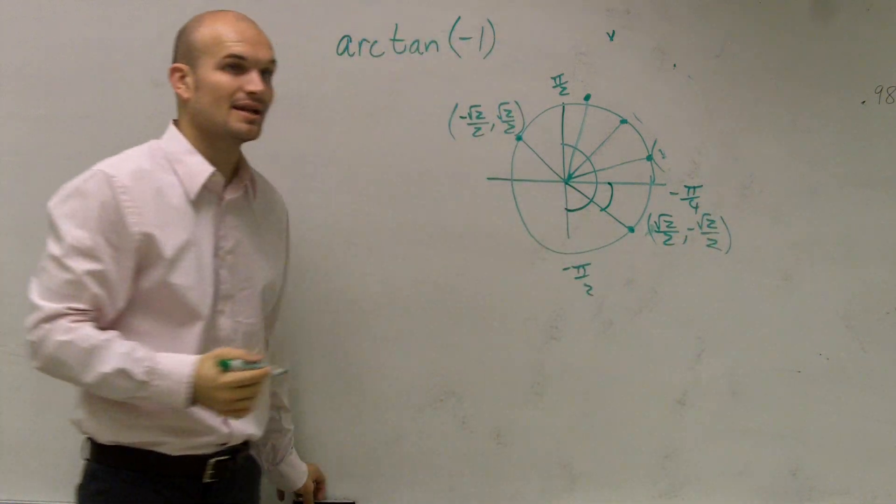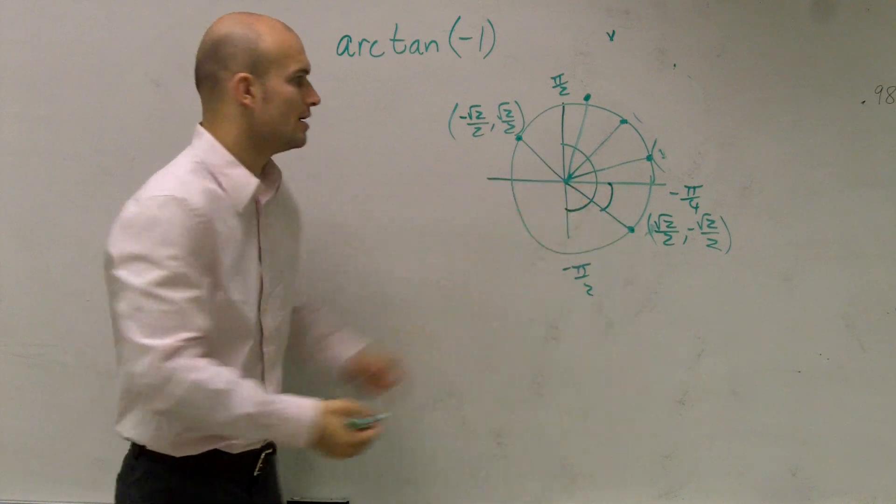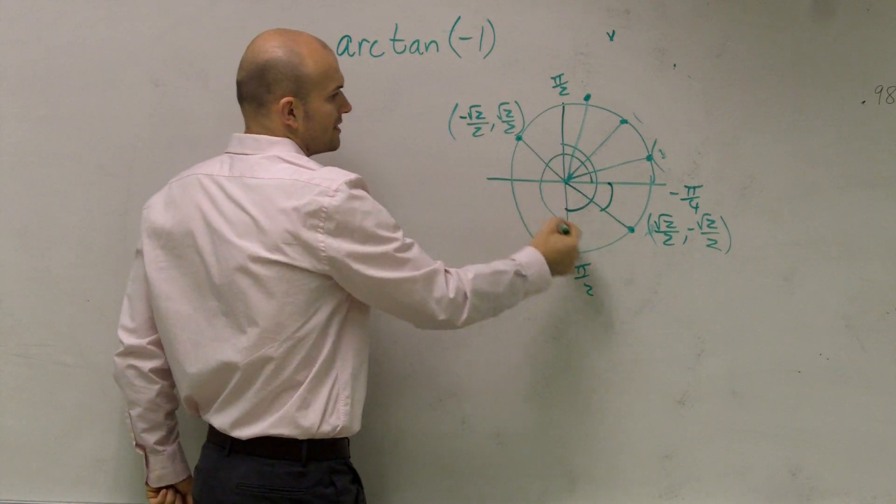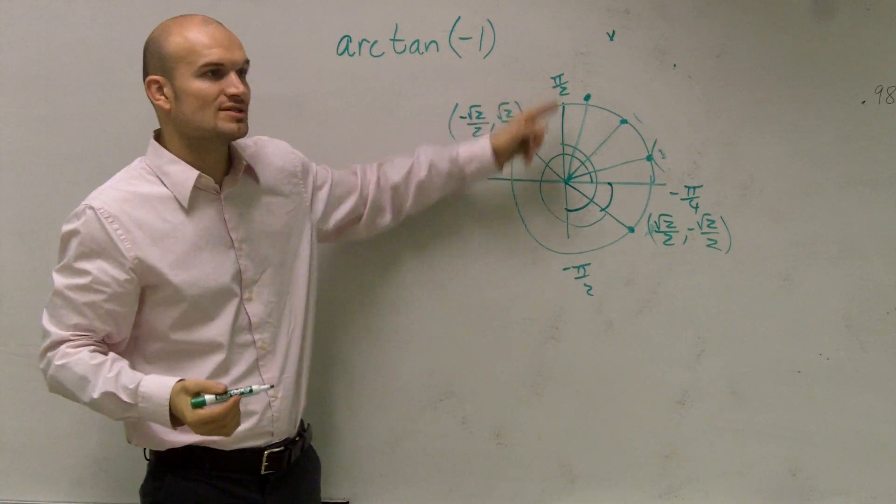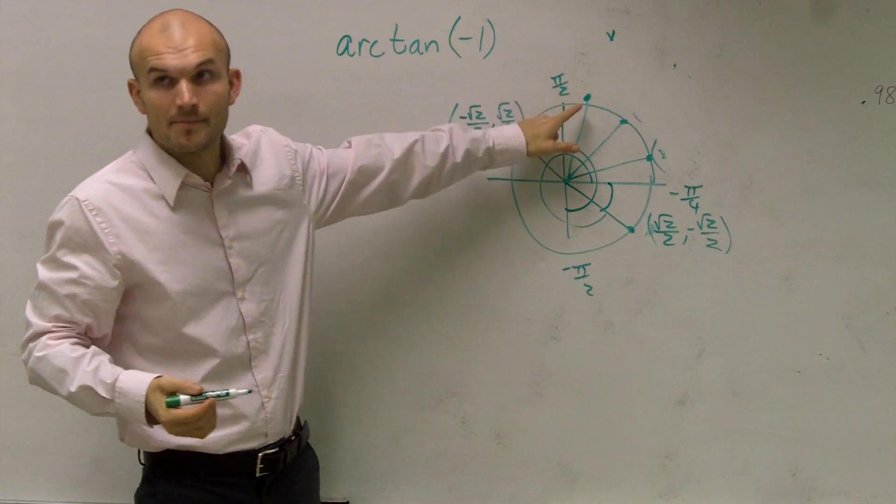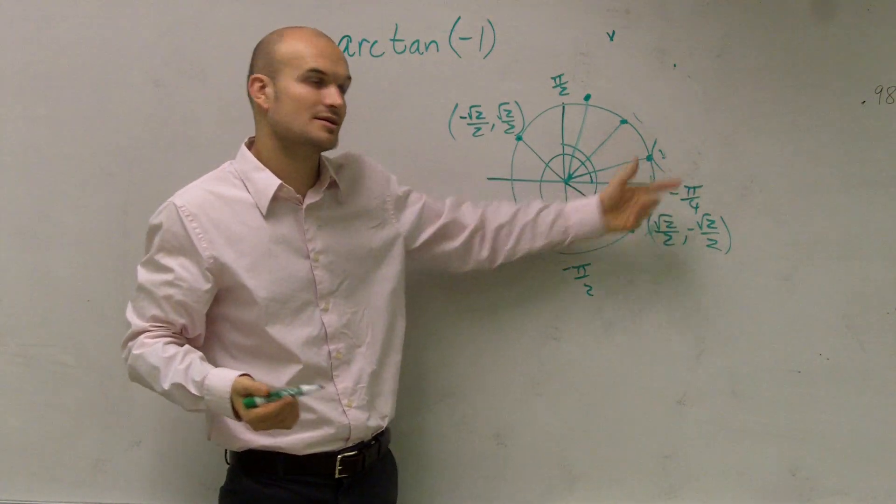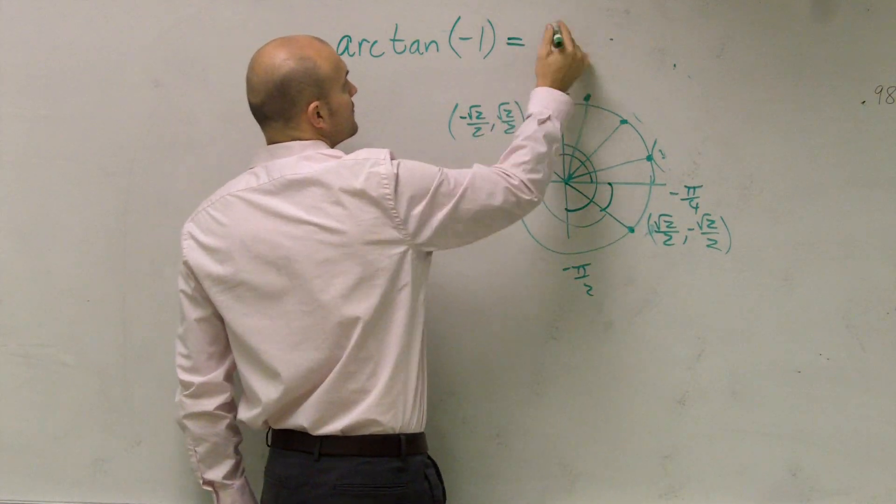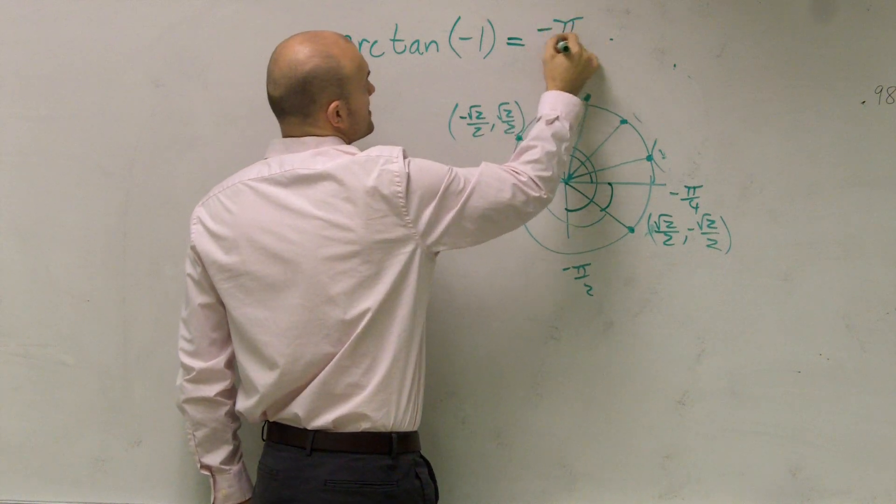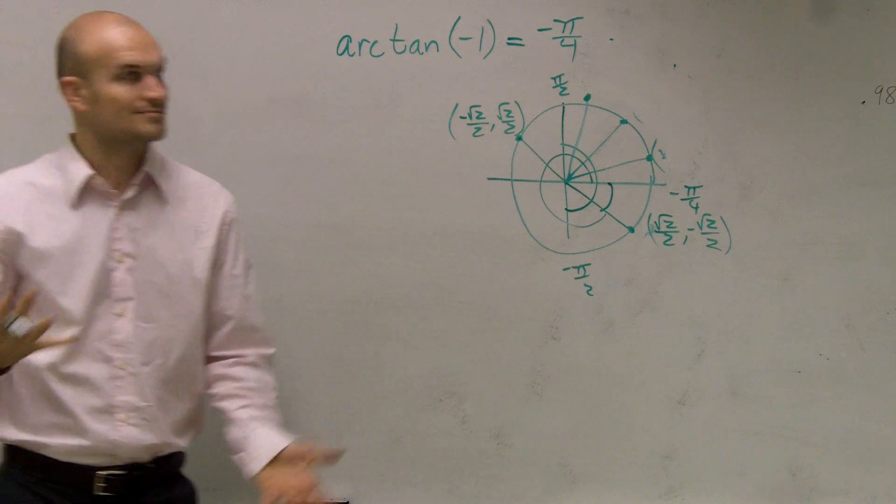Now, one quick little mistake that a lot of students make is they say, oh, why can't it be 5 pi over 4? Well, 5 pi over 4, ladies and gentlemen, is going to be outside of our range, right? It has to be between negative pi over 2 and pi over 2, okay? So therefore, negative pi over 4 is going to be our final answer. So my theta for this angle is going to be negative pi over 4, all right? Yes, yes, yes.